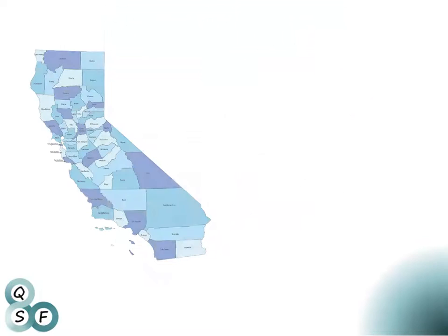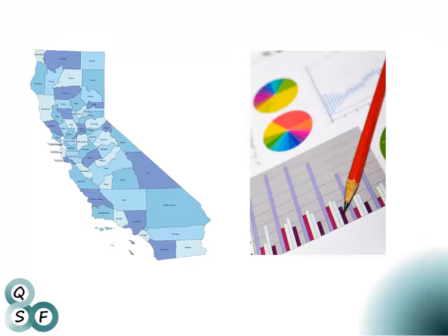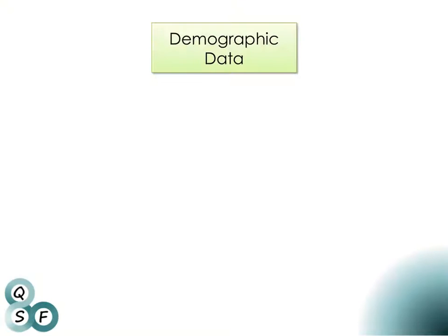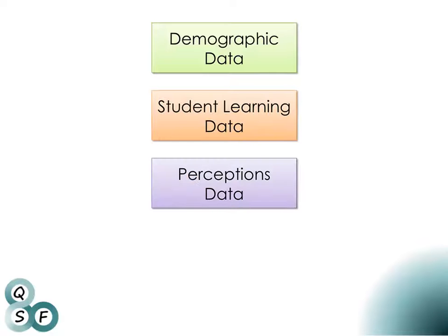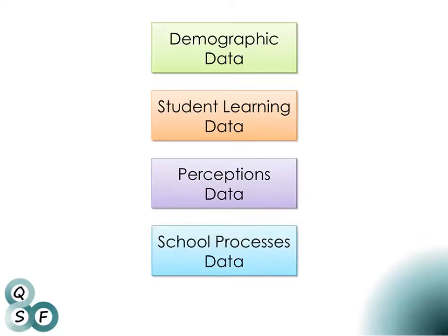Dr. Victoria Bernhardt, a California researcher in educational data analysis, has identified four basic categories of data: demographic data, student learning data, perceptions data, and school processes data.